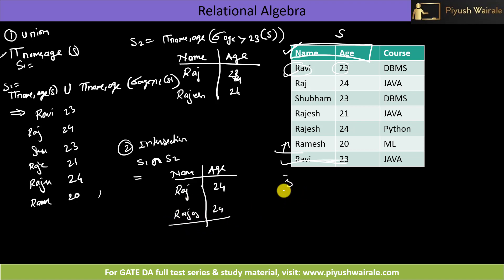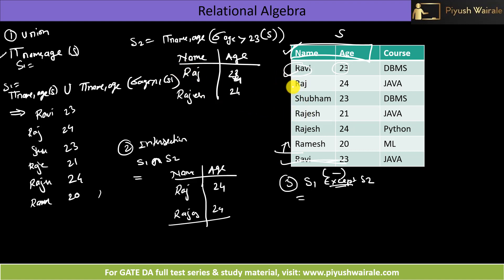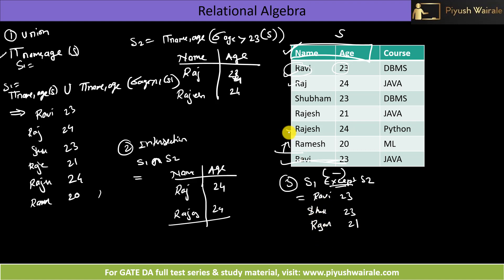For difference: S1 minus S2 — in relational algebra we use minus, in SQL we use except. S1 minus S2 gives elements present in S1 but not in S2. So Raj 24 and Rajesh 24 are removed. Output will be: Ravi 23, Shubham 23, Rajesh 21, and Ramesh 20.